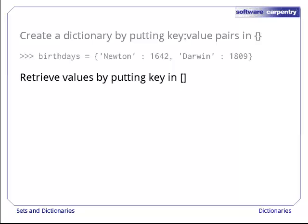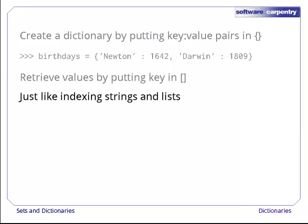We can get the value associated with a key by putting the key in square brackets. This looks just like subscripting a string or a list, except dictionary keys don't have to be integers. They can be strings, tuples, and so on.